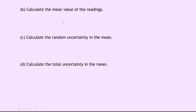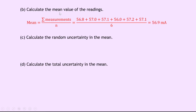Part B says to calculate the mean value of the reading. Remember to get our mean, we add up all our measurements and divide by how many measurements we have in total. So if we do that, we get this sum divided by 6, which is equal to 56.9 milliamps.